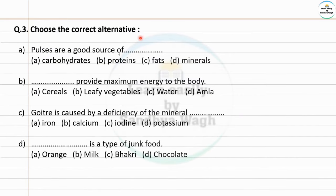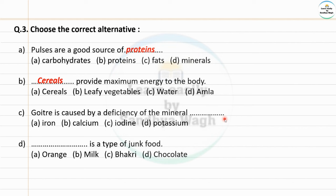Question 3 — Choose the correct alternative. Pulses are a good source of dash — carbohydrates, proteins, fats, or minerals? Answer: proteins. Dash provides maximum energy to the body — cereals, leafy vegetables, water, or amla? Answer: cereals. Goiter is caused by a deficiency of the mineral dash — iron, calcium, iodine, or potassium? Answer: iodine.